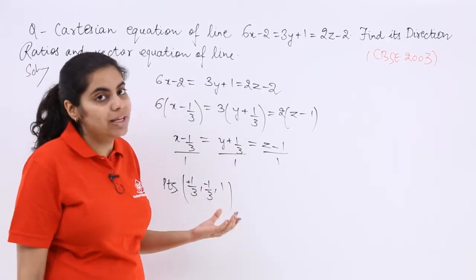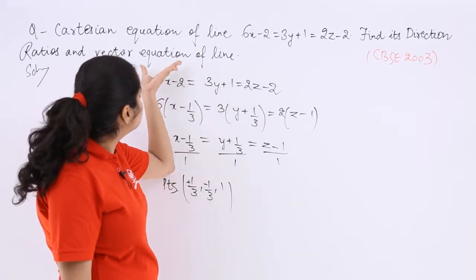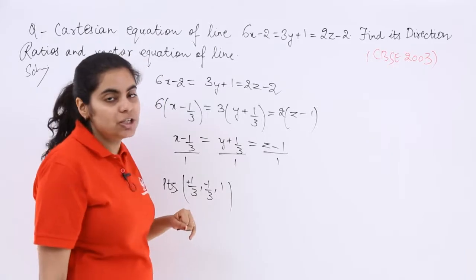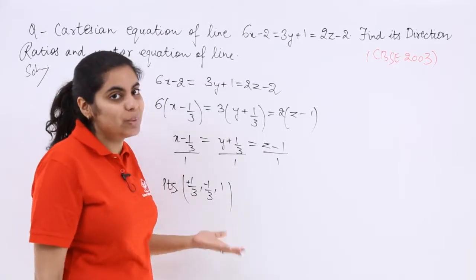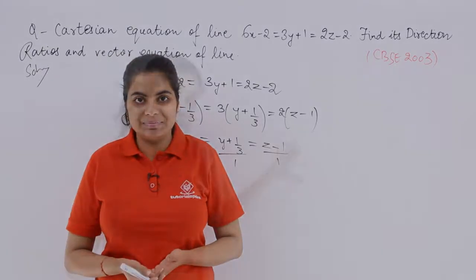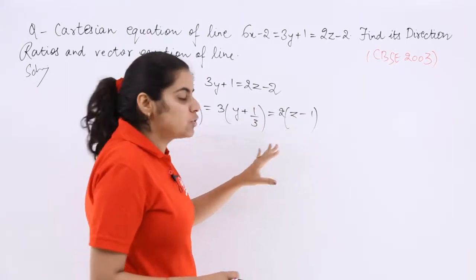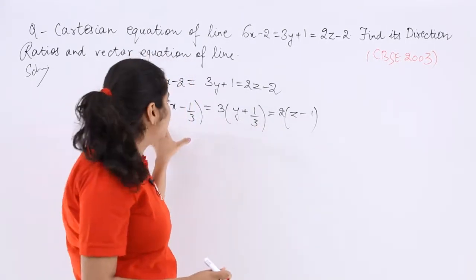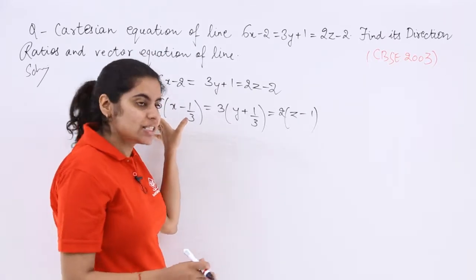When these are the points, you have to find out the vector equation and the direction ratios. So what are the direction ratios proportional to and what is the vector equation? After finding this, we have to see that these are 6, 3, and 2 which should be vanished. So let us find the LCM of 6, 3, 2, which is 6 only.